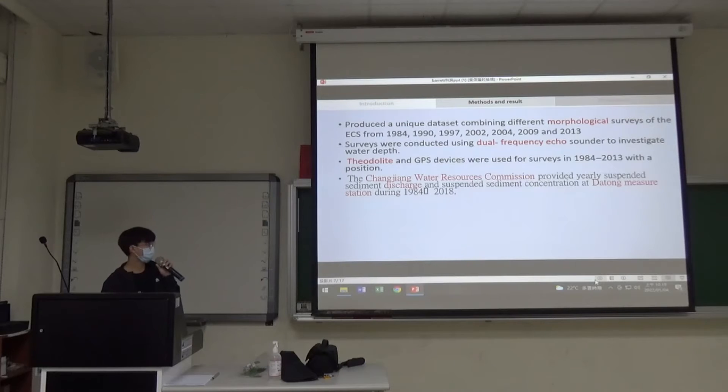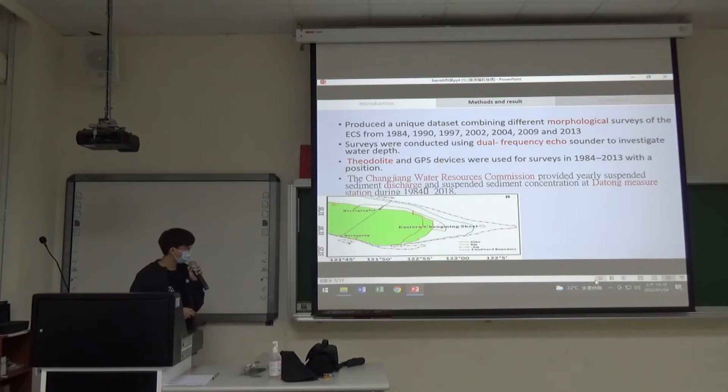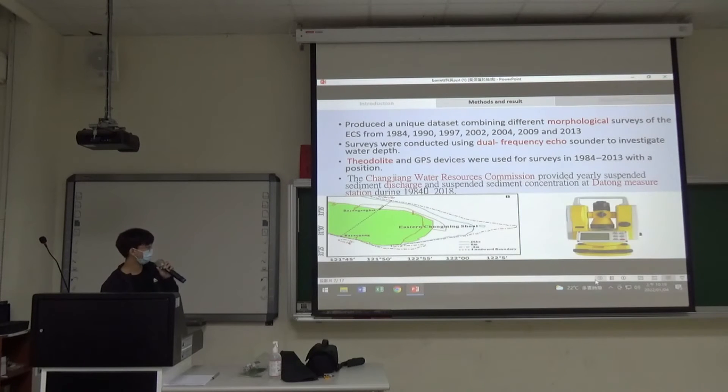The surveys were conducted using dual frequency echo sounder to investigate depths. Dual frequency echo sounder is a kind of sound wave device. Here is the result: red light represents 2 meters deep water, and blue light represents 0 meters deep water. DGPS devices were used for surveys from 1984 to 2013 for positioning. Here is a picture of the device showing latitude and longitude.